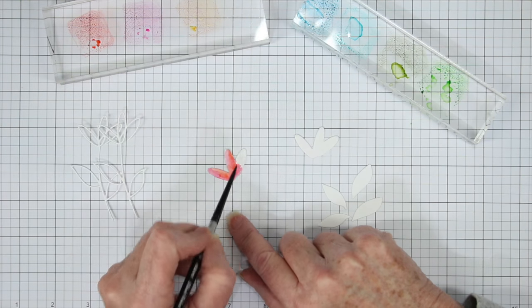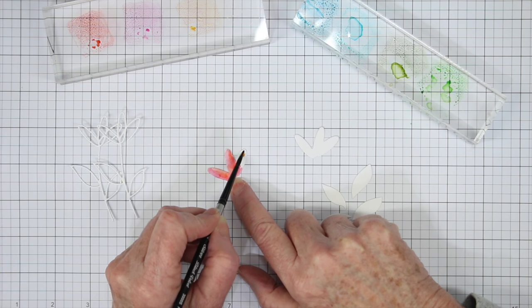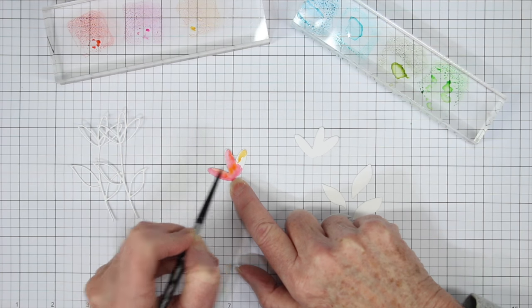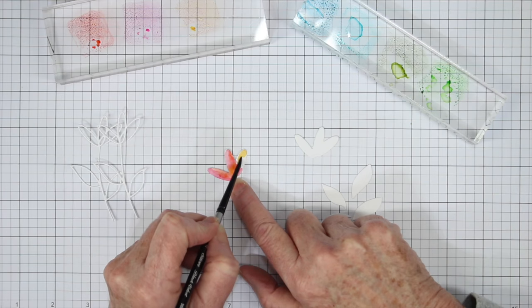I've saved the very right part of the blossom for the spiced marmalade, and so this will give me quite a bit of orange color on this one petal. So all of my colors are in the same family.